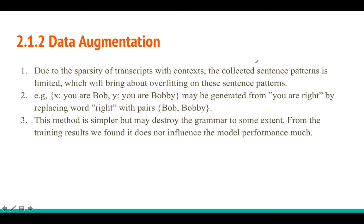For data augmentation: you may have 10,000 or 20,000 names but still not enough training data. So they take a sentence — for example, 'you are right here' — and replace the word 'right' with random words like 'Bob' or 'Bobby.' This can double or triple the dataset size. It may destroy grammar, but they report it doesn't significantly affect results.